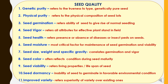Seed moisture is the most critical factor for maintenance of seed germination and viability. Seed size, weight and specific gravity correlate germination and vigor. Seed color often reflects conditions during seed maturity. Seed viability refers to the living properties and life span of seeds. Seed dormancy refers to the inability of seed to germinate in favorable environmental conditions. Improved varieties refers to the superiority of a variety over existing ones.